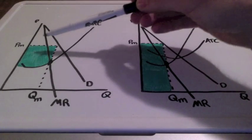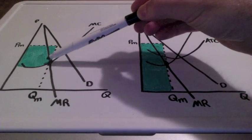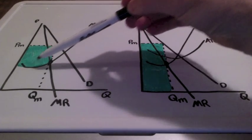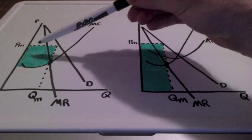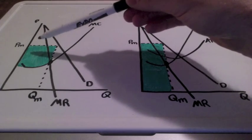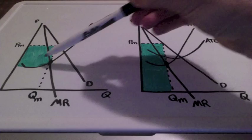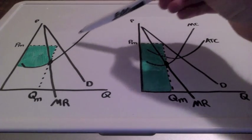From our price on down to our marginal cost curve, which is shaded in green, represents the firm's producer surplus. Remember, the marginal cost curve represents the firm's supply curve.